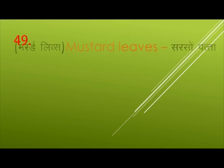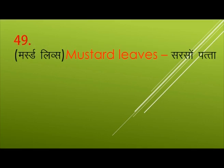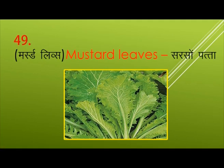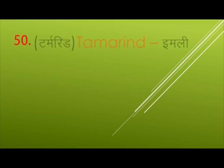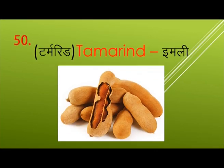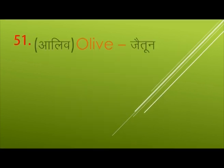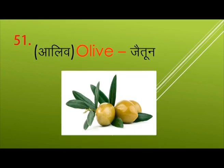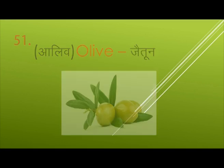Mustard Leaves — Sarson Patta. Tamarind — Imli. Olive — Jaitun.